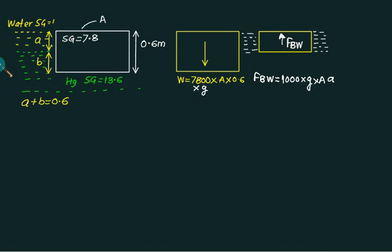Similarly, we'll consider another liquid, that is mercury. This portion is in the mercury, so the buoyant force due to mercury is given as 13600 into g into A into B, where A is the cross-section area.